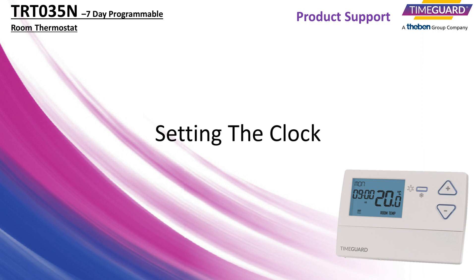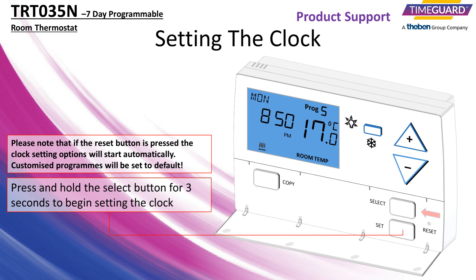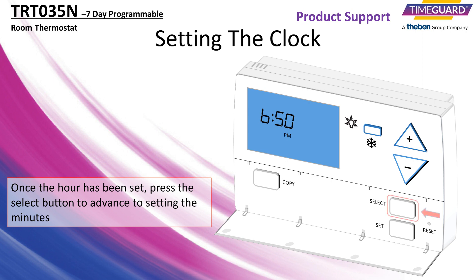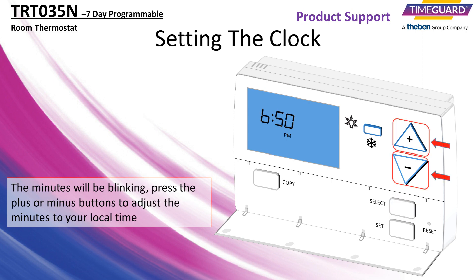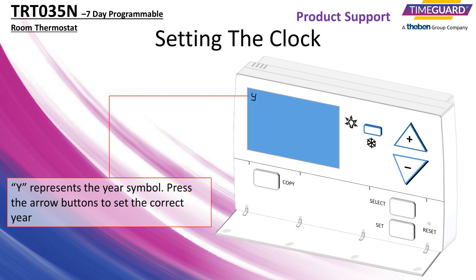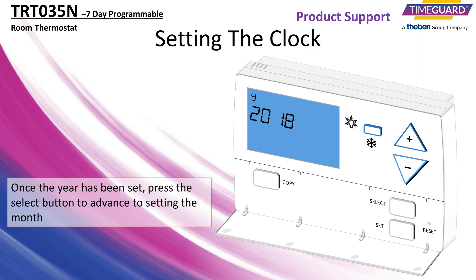Setting the clock for your device. The hour will be blinking. Press the plus or minus buttons to adjust the hour to your local time. Once the hour has been set, press the select button to advance to setting the minutes. The minutes will be blinking. Press the plus or minus buttons to adjust the minutes to your local time. Once the minutes have been set, press the select button to advance to setting the correct year. Y represents the year symbol. Press the plus or minus buttons to set the correct year.